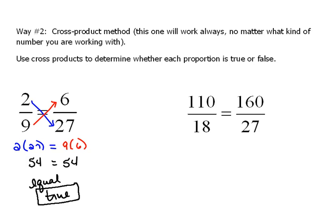Now, again, with this one, we could have simplified it. We could have said 3 goes into 6 2 times. 3 goes into 27 9 times. So, 2 9ths would have been equal to 2 9ths.